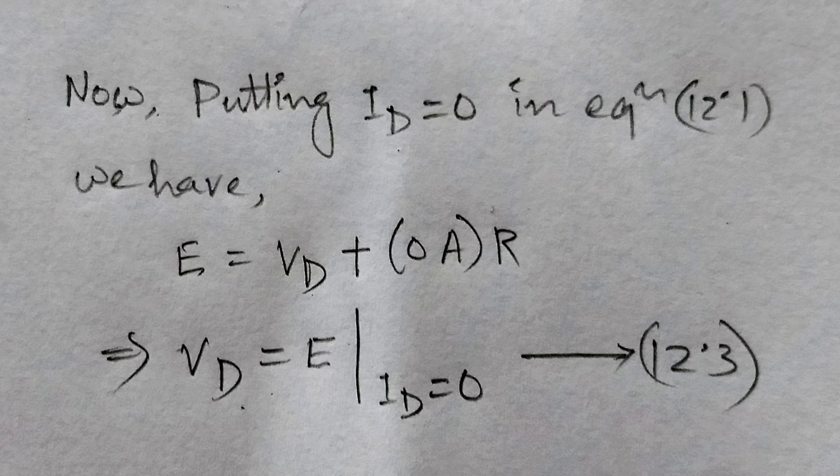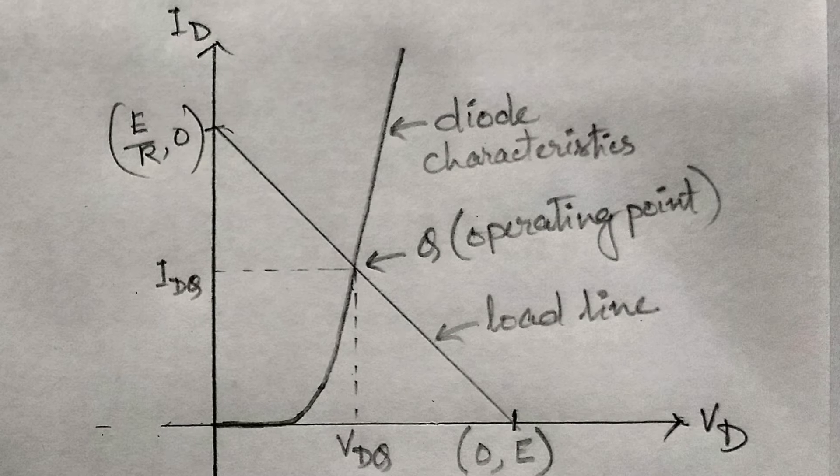Again, if we set Id equal to zero ampere in equation 12.1 and solve for Vd, we have the magnitude of the diode voltage in horizontal axis.